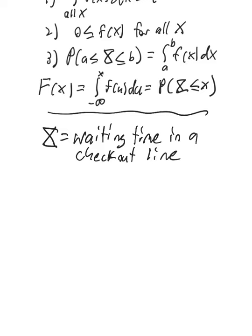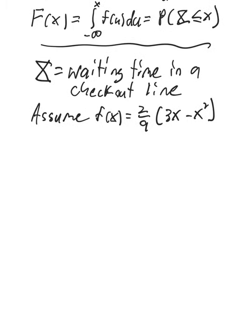It'll be continuous since time is usually measured continuously. Let's assume here that values for x are between 0 and 3. You'll never wait more than 3 minutes. And let's assume that here is your density function. Little f of x is 2 ninths times the quantity 3x minus x squared. This is the same function we looked at last Friday or a week ago Friday. This is a quadratic function.